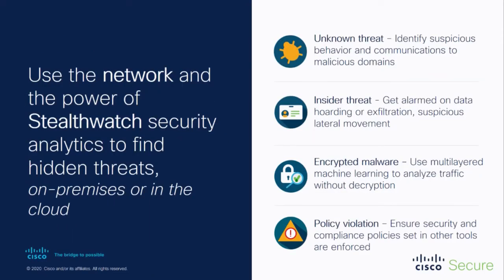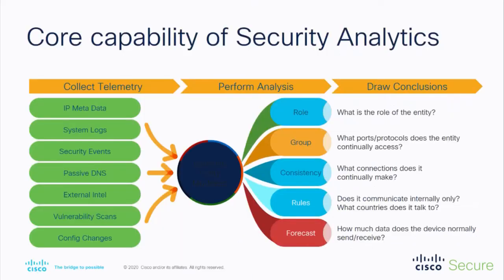Stealthwatch has the ability to detect threats in encrypted traffic — that's probably one of the few technologies in the market able to do that using machine learning and behavioral modeling. We call it dynamic entity modeling, and it's a pretty interesting concept. We collect telemetry — it could be metadata, system logs, security events, passive DNS — all in one place, and run that through a machine to build a model for you.